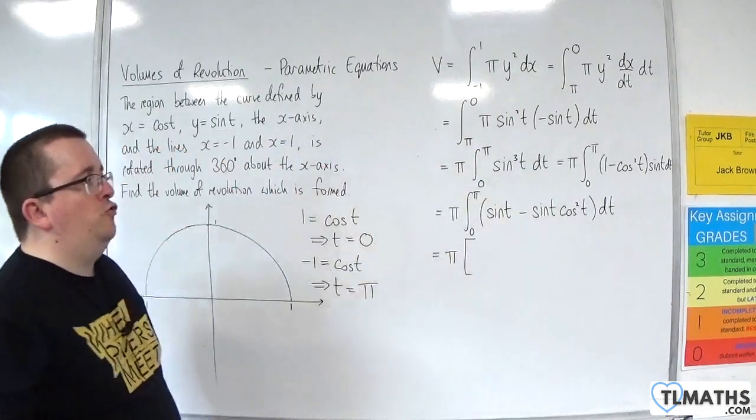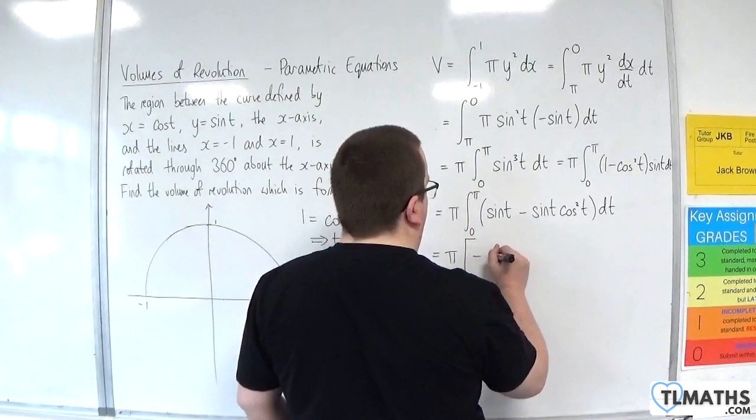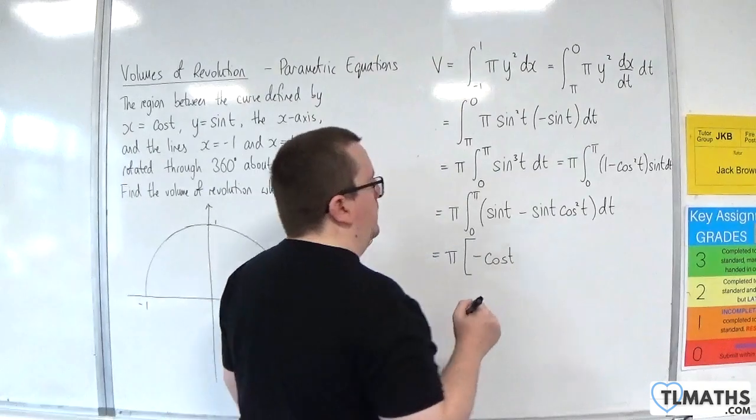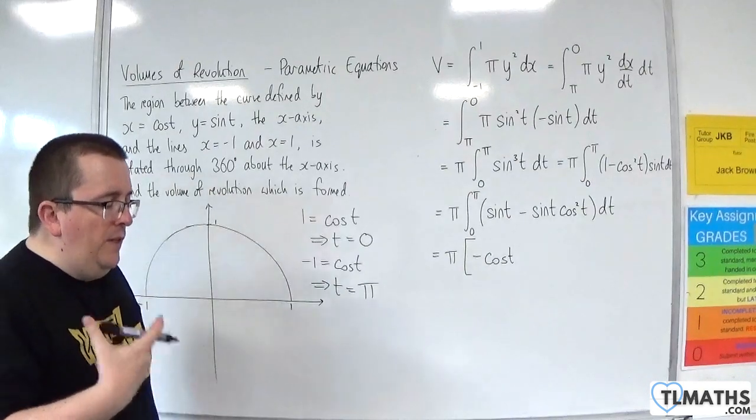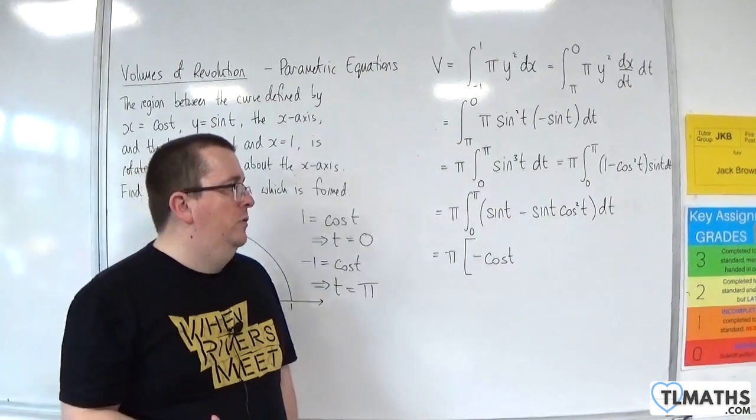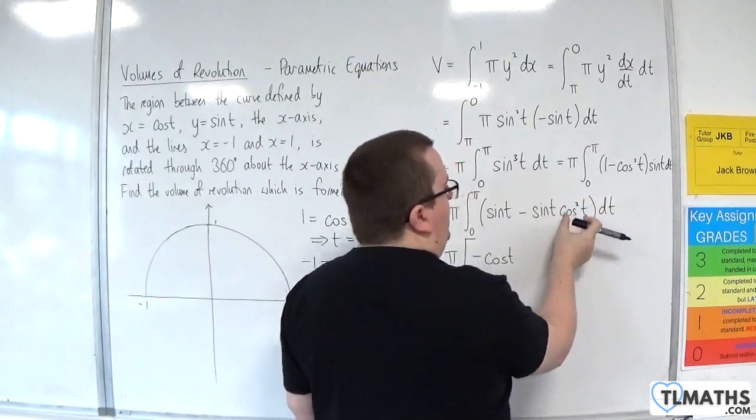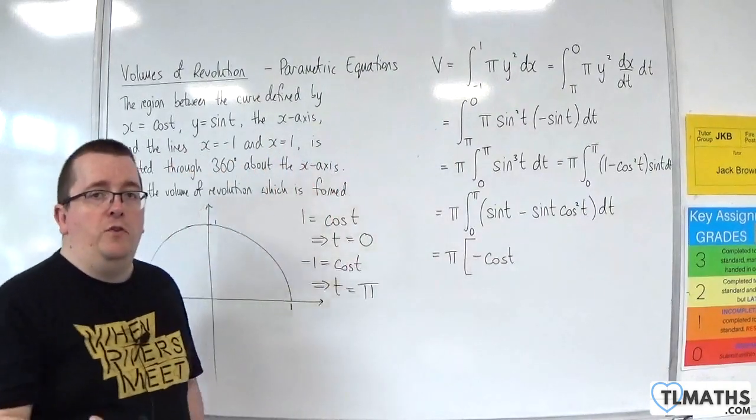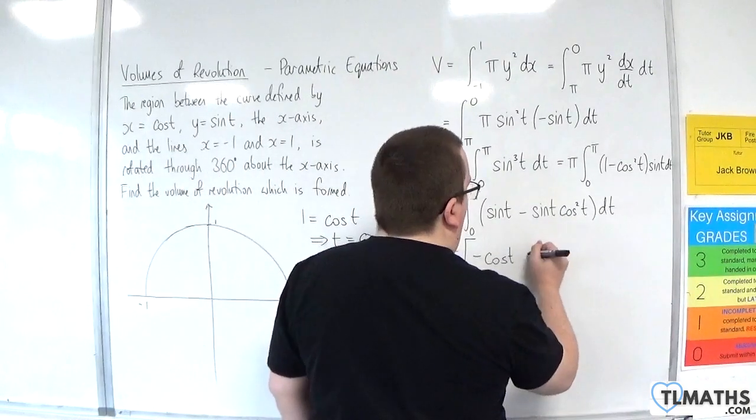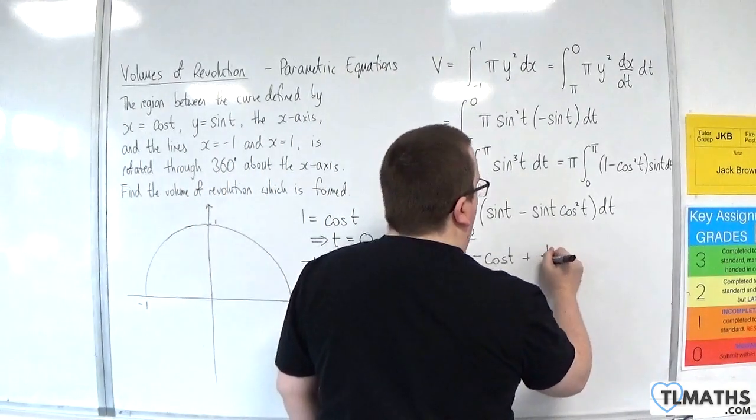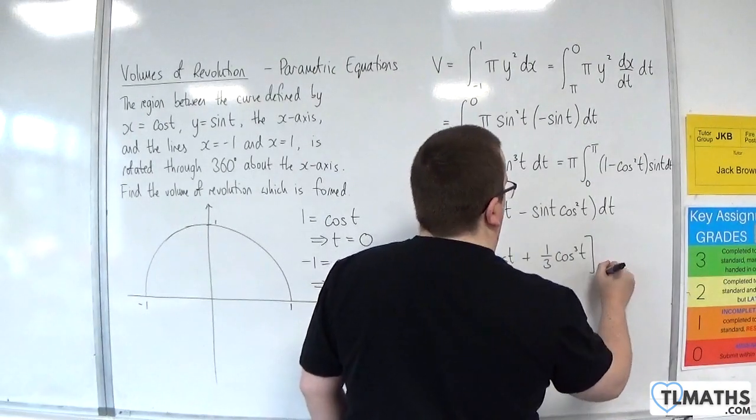Now, I'm going to go straight into the integral here, because sine of t integrates to minus cosine t. And the sine t cosine squared, well, that I can do by reversing the chain rule. So thinking of it as cosine of t squared, the derivative of cosine t is minus sine t, which is what I've got out the front. So actually, this will be plus 1 third cosine cubed t between 0 and pi.